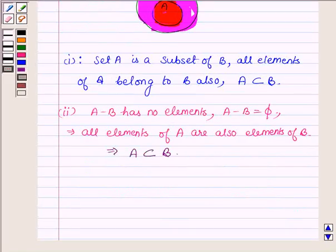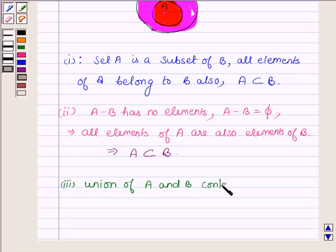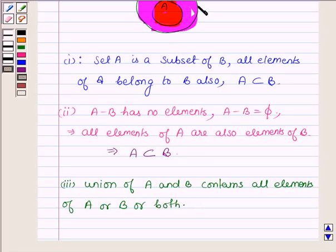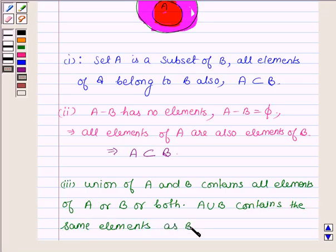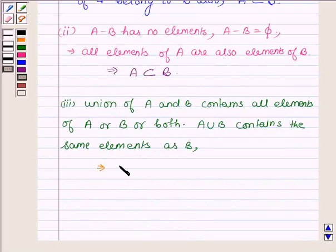Now the third condition is union of A and B contains all elements of A or B or both. Now from the Venn diagram we see that A union B contains the same elements as B. So this implies that all elements of A belong to B, and hence A is a subset of B.